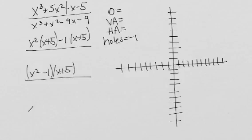x squared minus 1 is further factorable to x plus 1 times x minus 1, and I still have that x plus 5 hanging out.